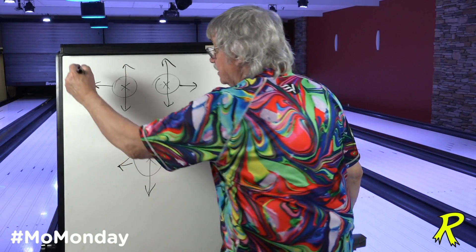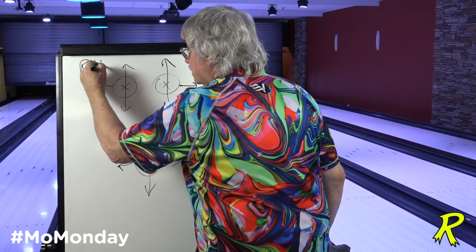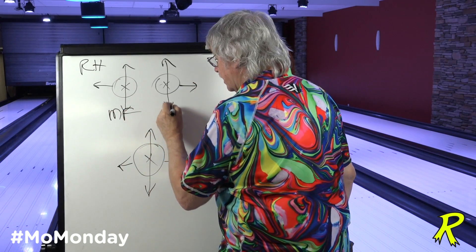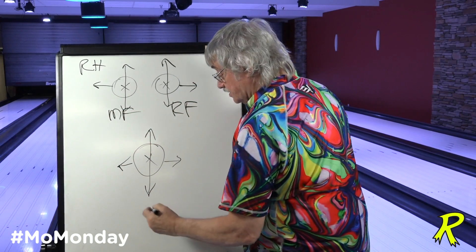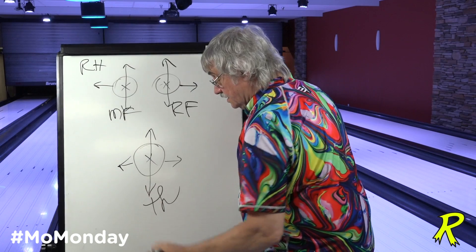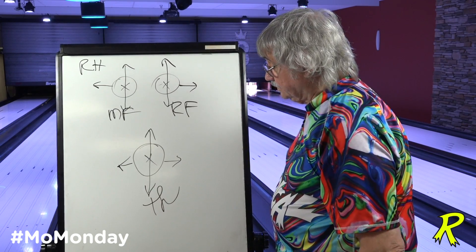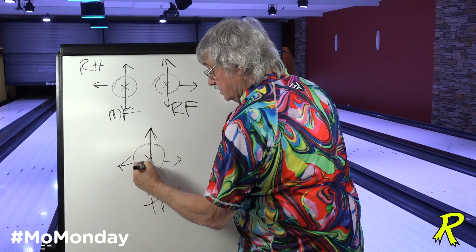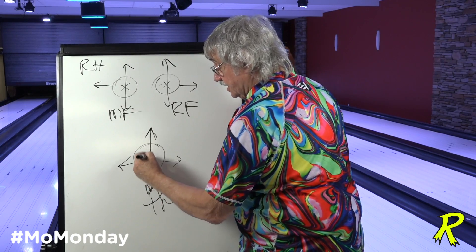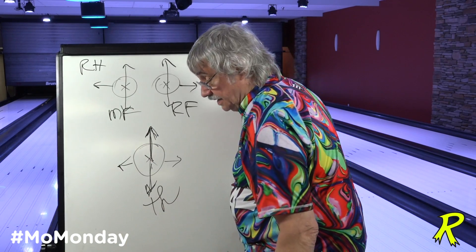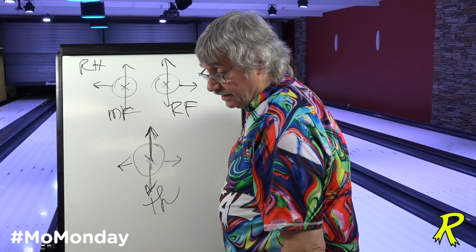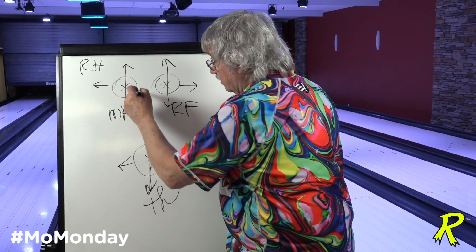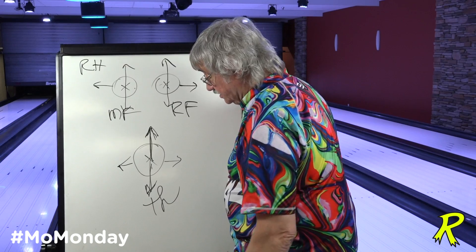If this is a right-hander, this is his middle finger, this is his ring finger, and this is his thumb. If you increase the strength of the thumb by pitching it forward, then the ball stays on your hand longer and you lose some revs, because the revs come from the force imparted by the fingers.